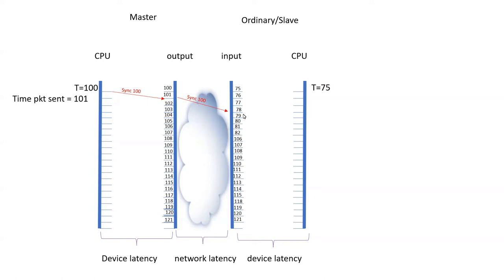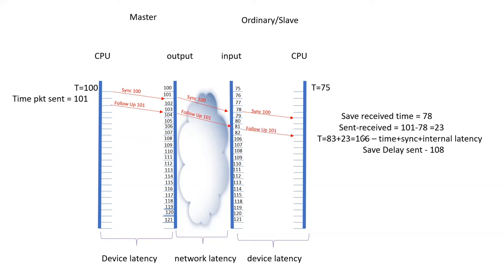The packet is received by the slave at time 78, and the slave saves that time. The master then sends a follow-up packet saying it actually forwarded that packet at time 101. The slave then says: it was forwarded from the master at 101 and I received it at 78, so the time difference is 23. My next time would have been 83, but I'm going to add the 23 to it, and now my time is 106.